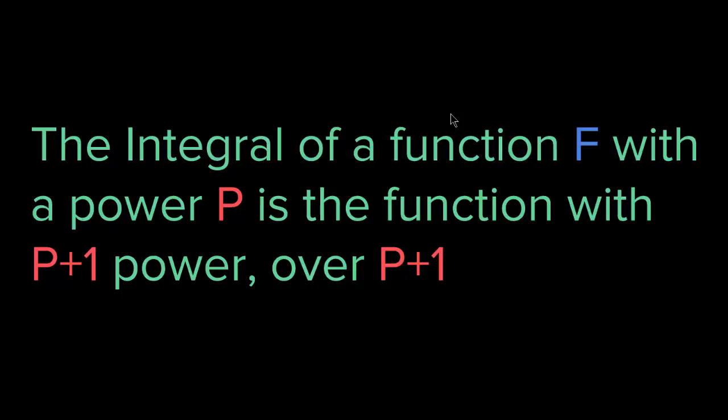So let's say we have x — x has a power of 1. What is the integral of x? Basically, you add 1 to the power of x, so it becomes x squared. And then whatever number you get, you put it on the bottom. So it becomes x squared over 2.